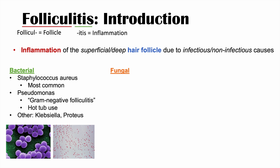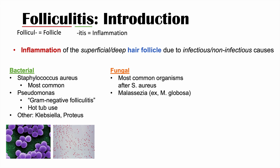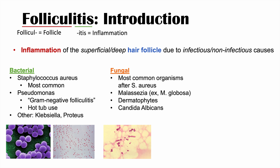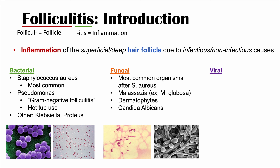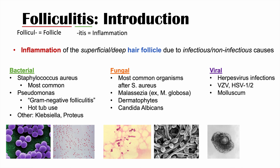The second category of infectious causes is fungal. Fungal causes are actually the most common organisms after Staphylococcus aureus, and these include Malassezia species like Malassezia globosa. Dermatophytes can also cause folliculitis, as can Candida albicans. The third category is viral causes, which include herpes virus infections like Varicella zoster virus and herpes simplex virus 1 and 2, as well as molluscum contagiosum virus.